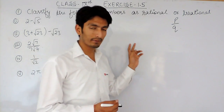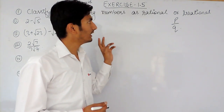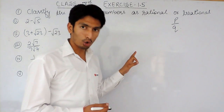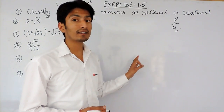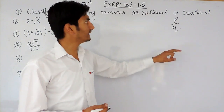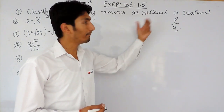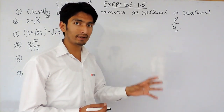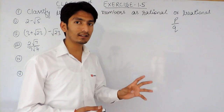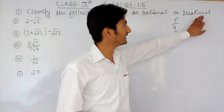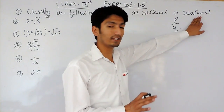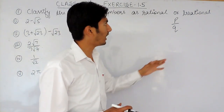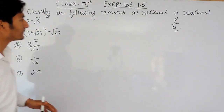The first type is a terminating decimal, which is a rational number. The second is non-terminating but repeating, which is also a rational number. But if a number is non-terminating and non-repeating, or non-recurring, it is known as an irrational number. I have discussed this in previous videos, so I hope you know what rational and irrational numbers are.